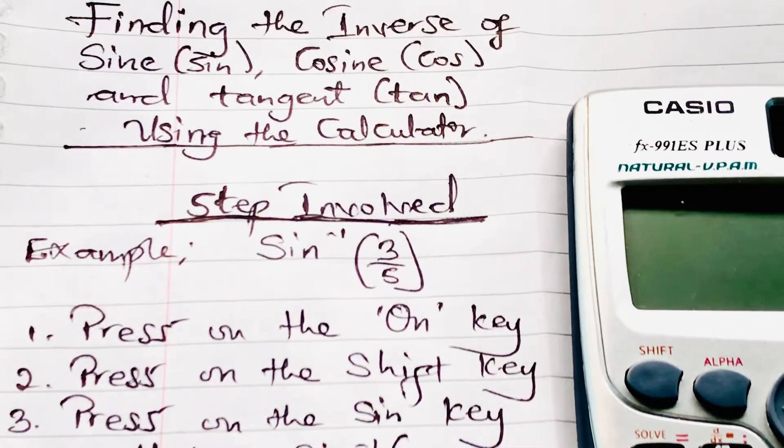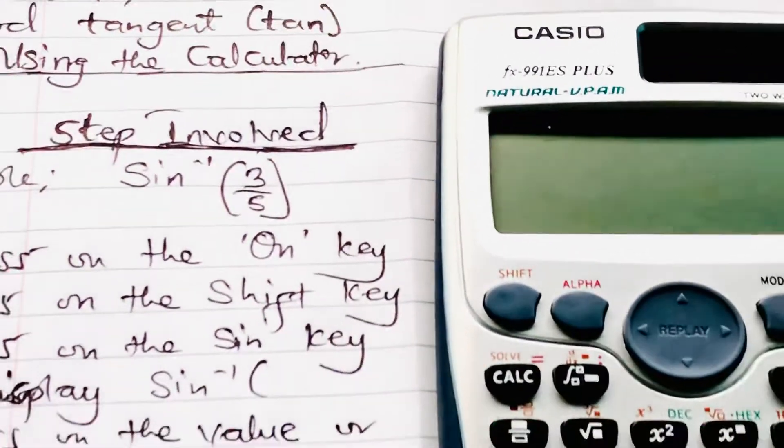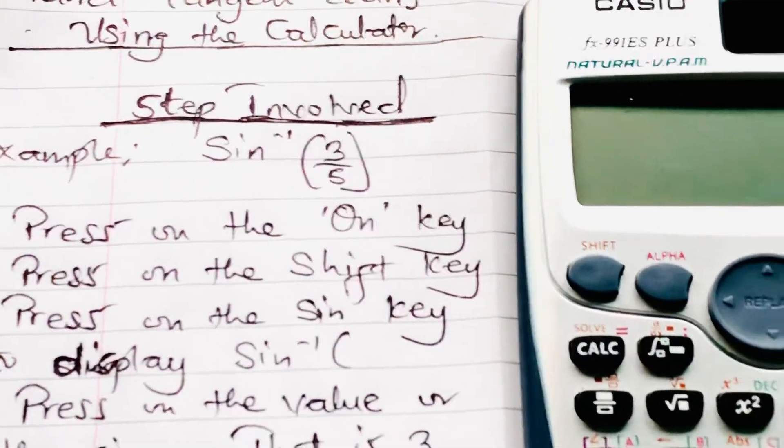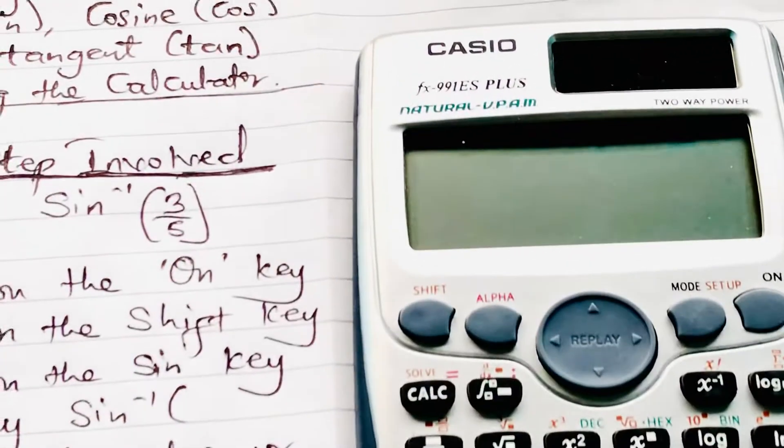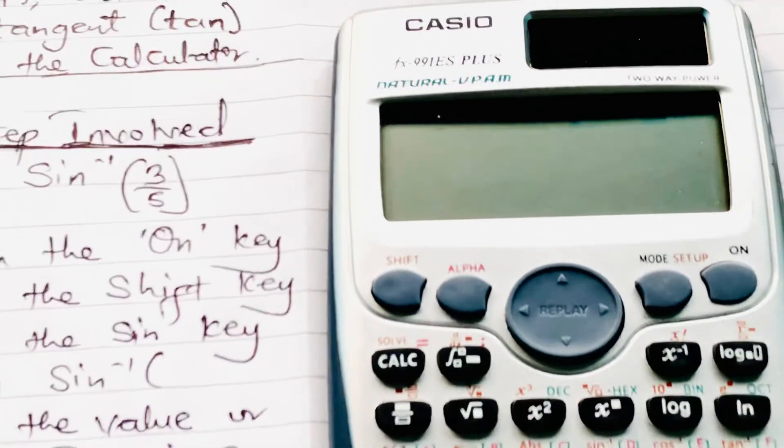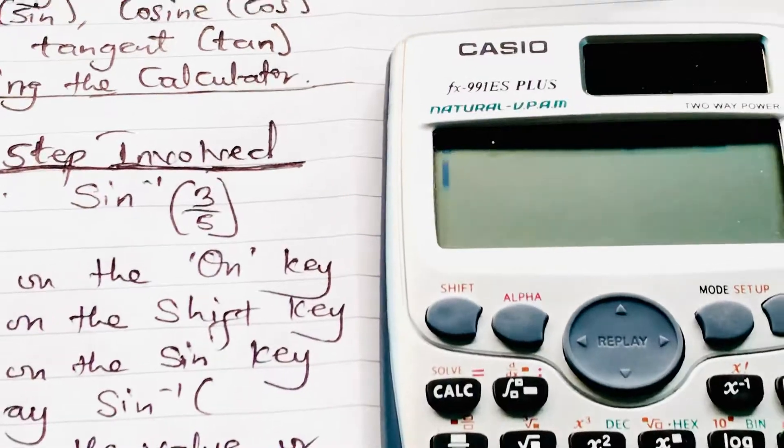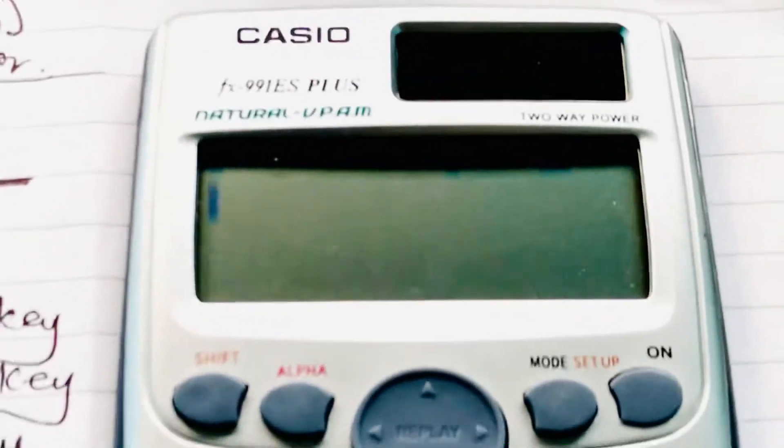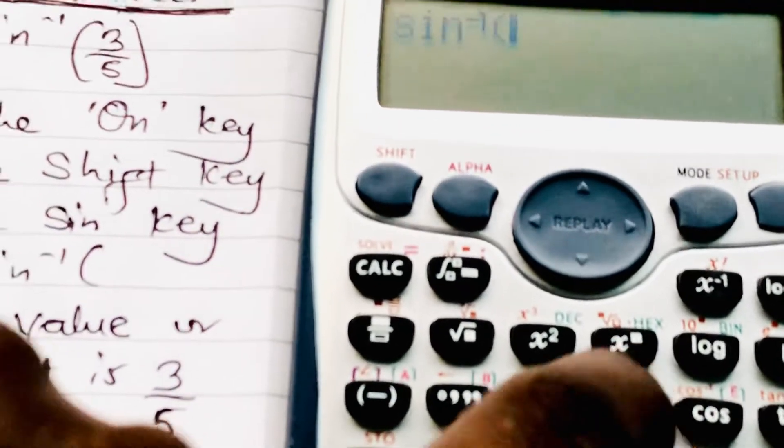In using the calculator to find this, we first of all have to turn on our calculator and press on the ON key. After that, we press on the SHIFT key, then we press on the SINE key.